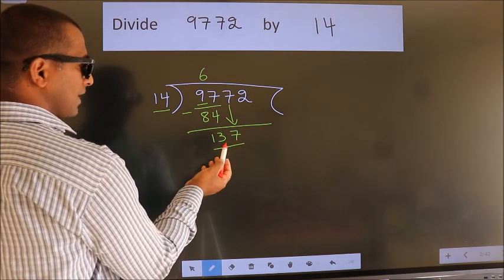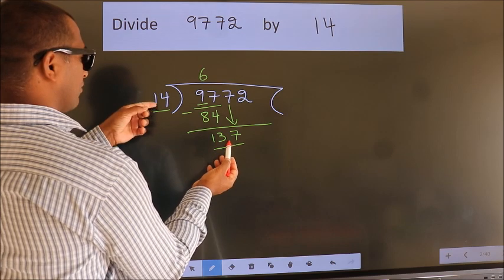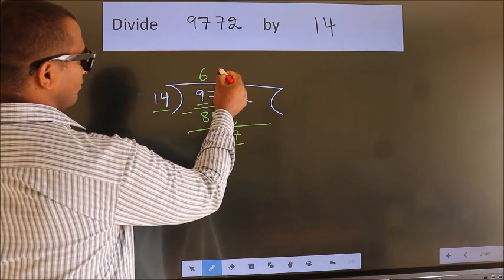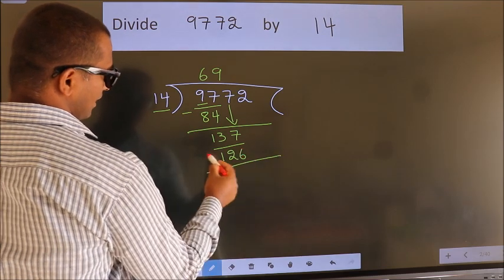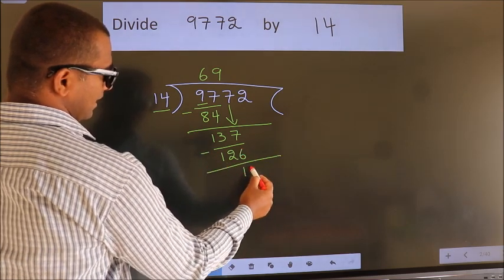A number close to 137 in 14 table is 14 times 9, 126. Now we subtract. We get 11.